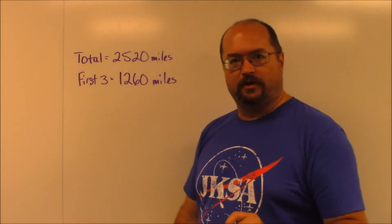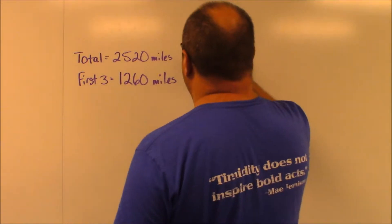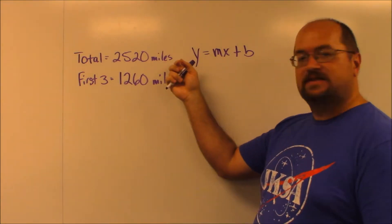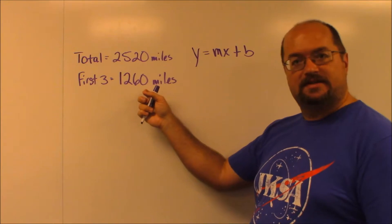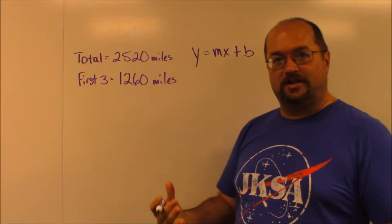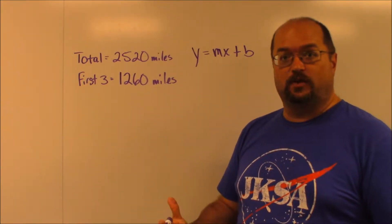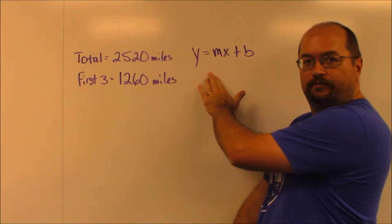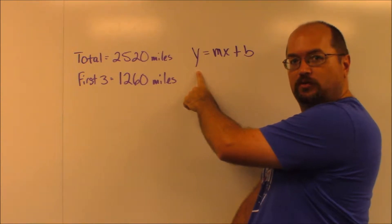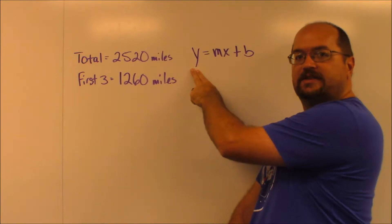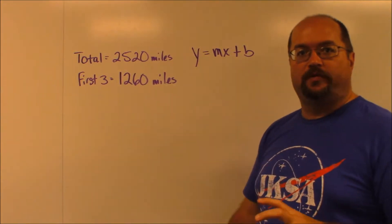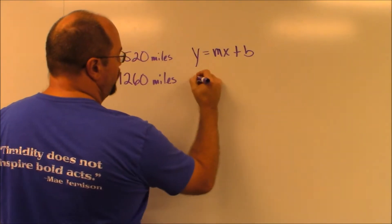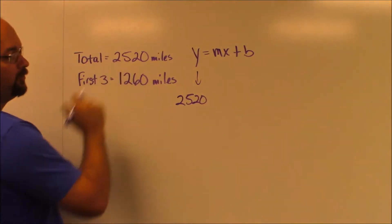This problem is a little bit different, but it's still going to follow the y equals mx plus b pattern. We're given a scenario where a family is on a road trip and they're traveling a set number of miles. We're given the distance they travel over the first three days, and then we're asked to set up an equation that would calculate the total number of days necessary — we don't actually have to solve it, we just have to set it up. Our y is going to be our total, which is the total number of miles the family will travel. So I'm going to replace y with 2,520, because that's the total number of miles.